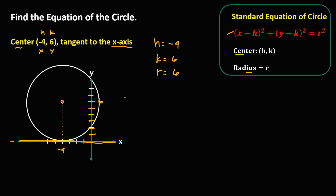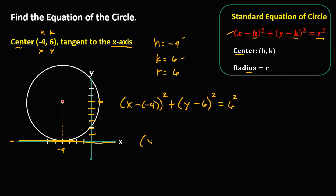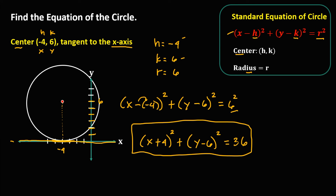To write the equation of the circle using the formula, we have x minus h, where h is negative 4, quantity squared, plus y minus k, where k is positive 6, quantity squared. To simplify: negative minus negative gives positive, so we get (x + 4)² + (y − 6)² = 36. This is now the equation of this circle.